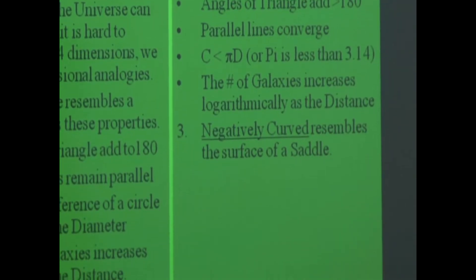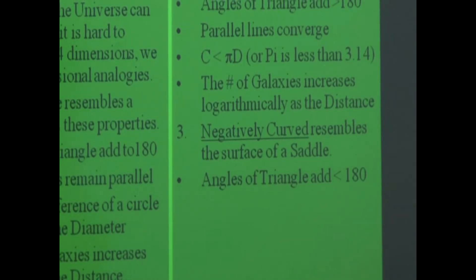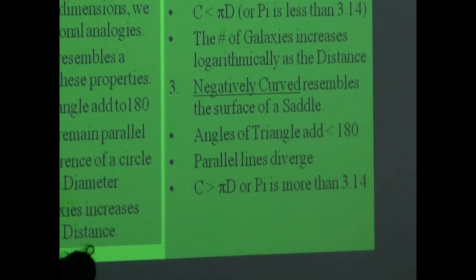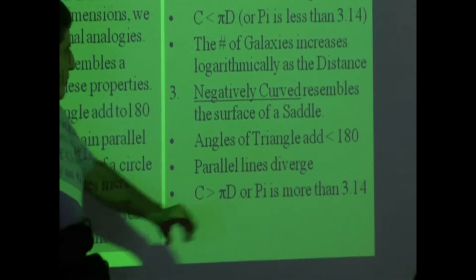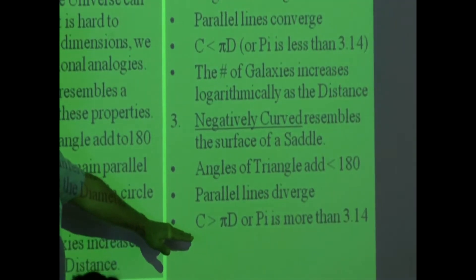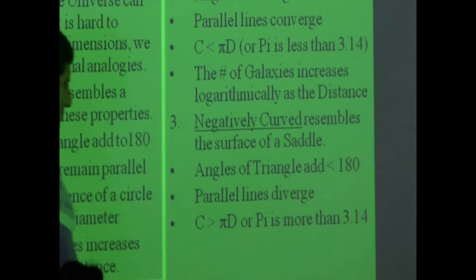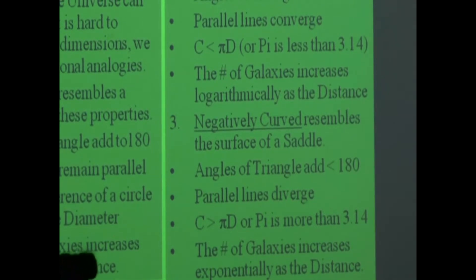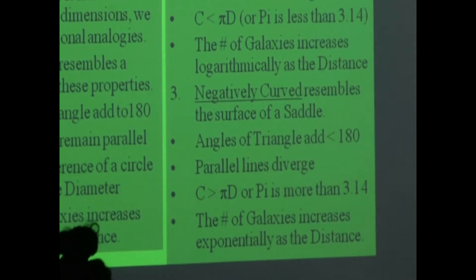Negatively curved space resembles the surface of a saddle. Angles of a triangle add less than 180. Parallel lines diverge. The circumference of a circle is greater than pi times the diameter — therefore pi is more than 3.14. In that kind of space, pi will not be 3.14; it will be larger. And the number of galaxies increases exponentially as the distance.